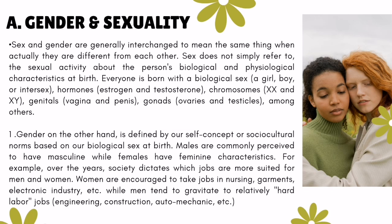Biological sex is determined by hormones — estrogen and testosterone — chromosomes — XX and XY — genitals — vagina and penis — and gonads — ovaries and testicles — among others.